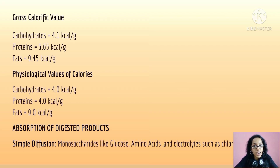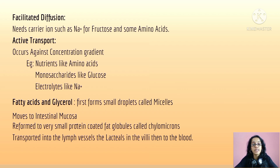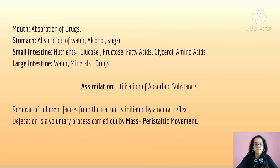Absorption of digestive products such as monosaccharides like glucose, amino acids, and electrolytes like chloride ions occurs by simple diffusion. Facilitated diffusion uses a carrier ion such as sodium for fructose and some amino acids. Active transport occurs against the concentration gradient for nutrients like amino acids, monosaccharides like glucose, electrolytes like sodium, fatty acids, and glycerol, which first form micellar droplets, move to the intestinal mucosa, and are reformed into small protein-coated fat globules called chylomicrons, transported into lymph vessels.